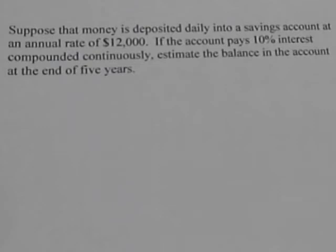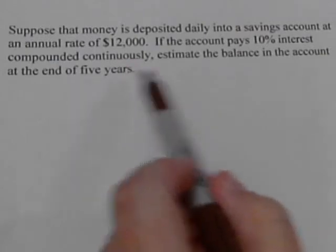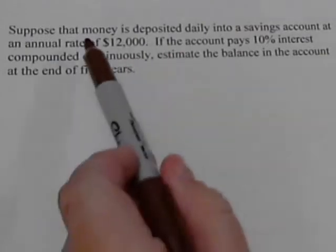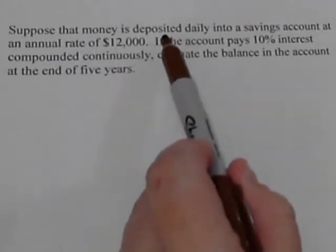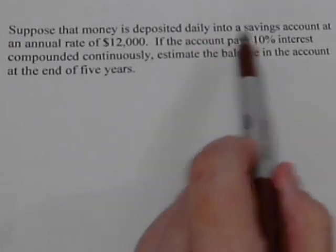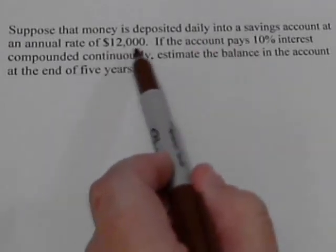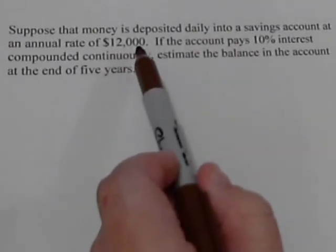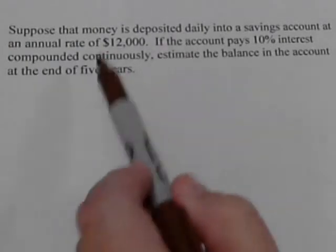Here's a problem dealing with a stream of payments. The difference between these types of interest rate problems and regular interest rate problems is that most regular interest rate problems start with some money at the beginning and that's all you put into it. But quite often you're going to continue to add more money. Suppose we have money that we're going to deposit daily, coming out to about twelve thousand dollars a year — so we're continually adding money into this.